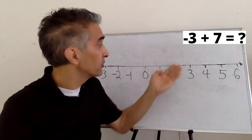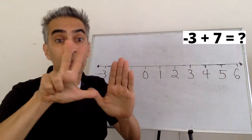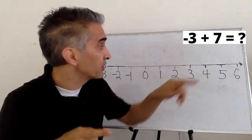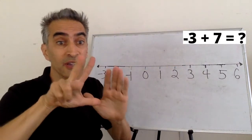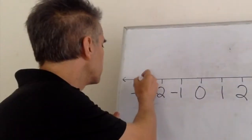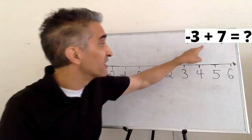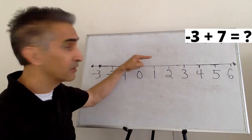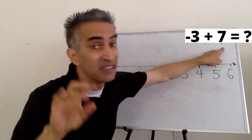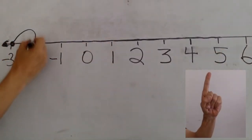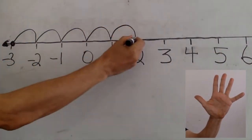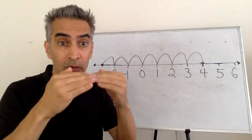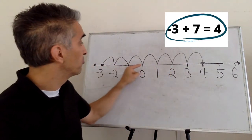Another example: What's negative 3 added to 7 equal? We're going to start with negative 3 — right there. We move to the right 7 spaces: 1, 2, 3, 4, 5, 6, 7.